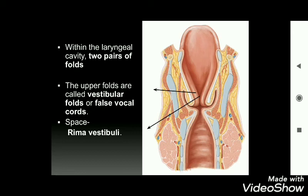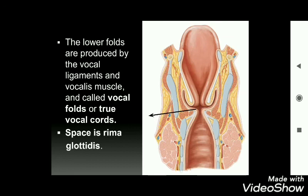Within the laryngeal cavity, we can identify two pairs of folds. The upper folds are the vestibular folds, also called false vocal cords; the space between them is the rima vestibuli. The lower folds, produced by the vocal ligaments and vocalis muscle, are the vocal folds or true vocal cords; the space between the two vocal cords is the rima glottidis.